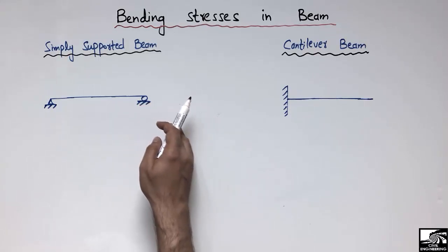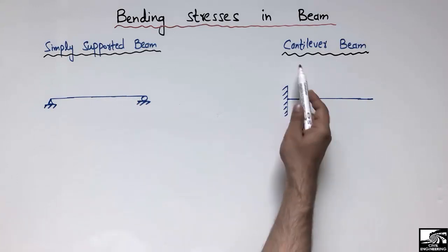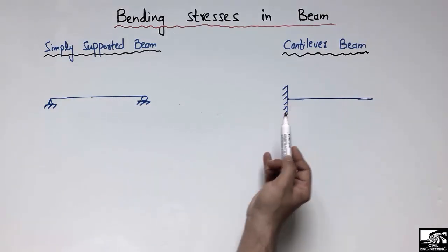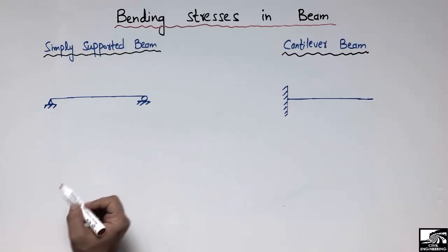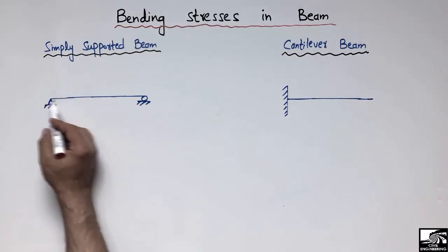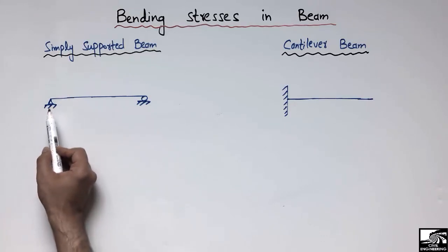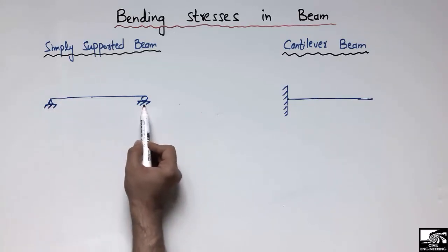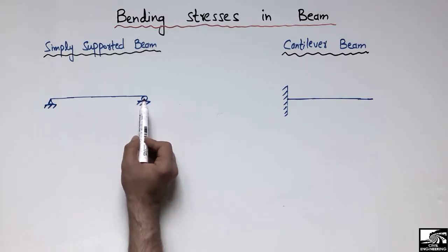In this lecture we are going to find out the bending stresses in two different types of beams: the simply supported beam on the left side and the cantilever beam on the right side. The simply supported beam is supported only at two ends — a hinge at the left side and a roller support at the right side.